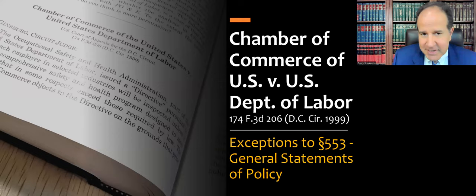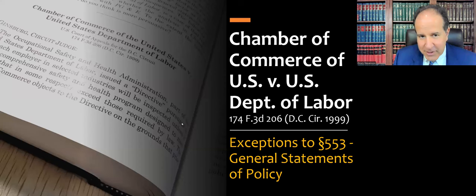We're going to be talking about exceptions to Section 553 of the Administrative Procedure Act for general statements of policy. This is a lead case in my casebook for statutory interpretation and regulation, and it also appears in a lot of administrative law casebooks. This is about the issue with notice and comment rulemaking that agencies normally have to follow for informal rulemaking. Under the APA, there are a couple of exceptions, one being for general statements of policy. Agencies will sometimes make a de facto rule and try to do it through a general statement of policy — and that's what the parties alleged here.